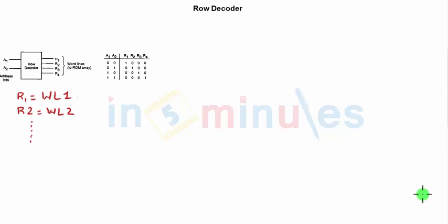Here on the screen I have shown the block diagram of a row decoder. It's a 2-to-4 row decoder where there are two address lines and there are four outputs.